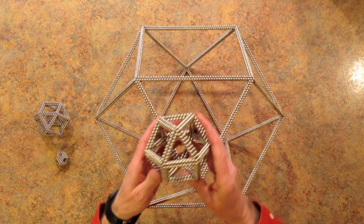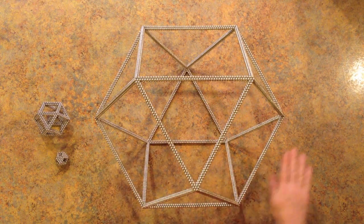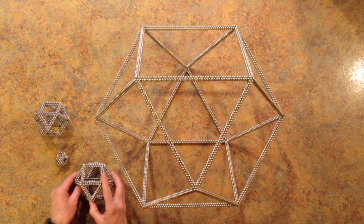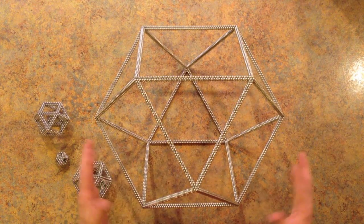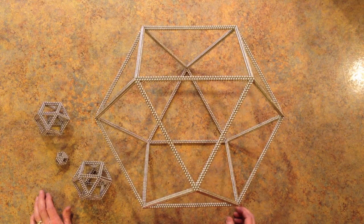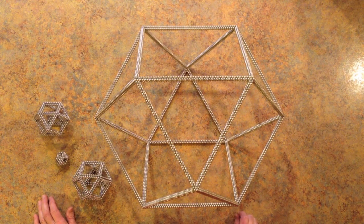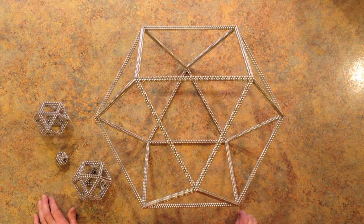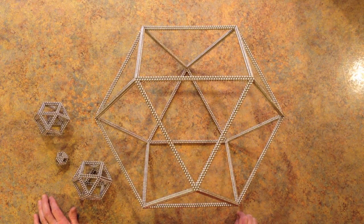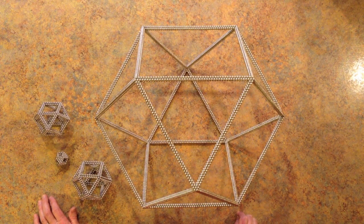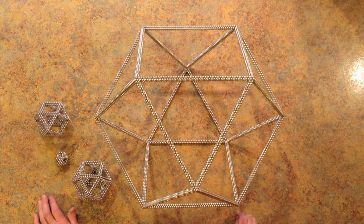With a height of 39 cm and an enclosed volume of 32.6 liters, this huge cuboctahedron frame might be the largest Archimedean or platonic solid frame ever built using 5 mm magnet spheres.